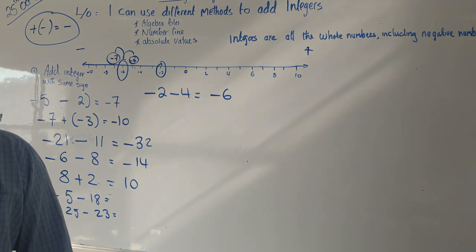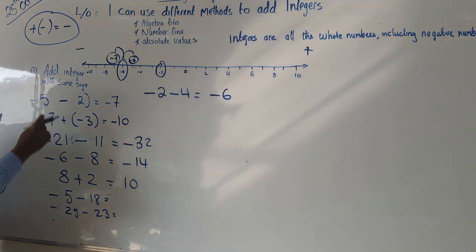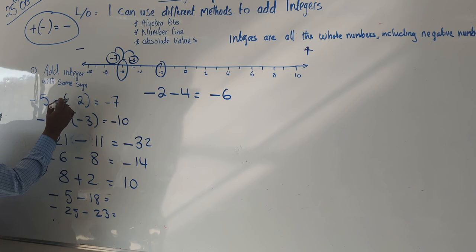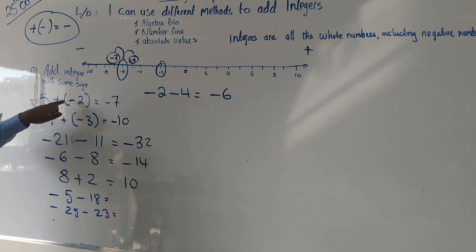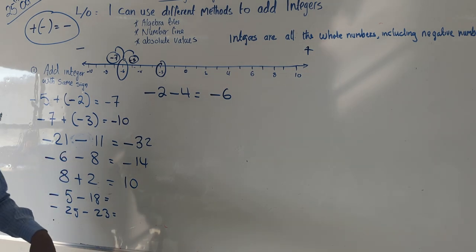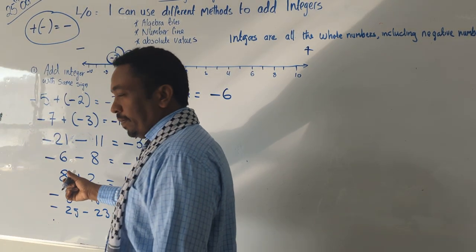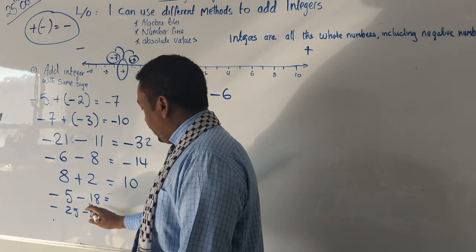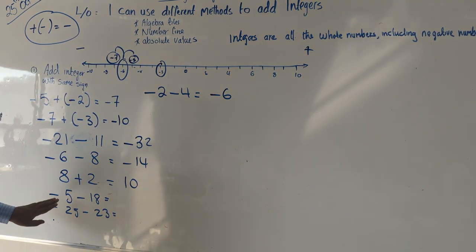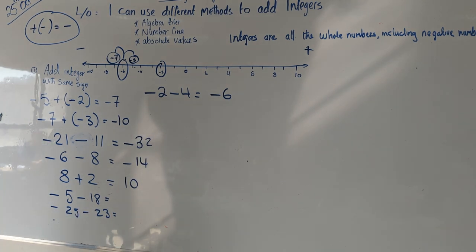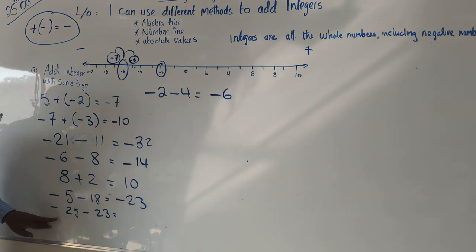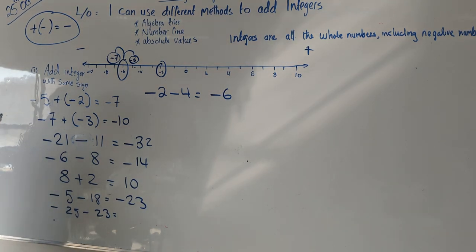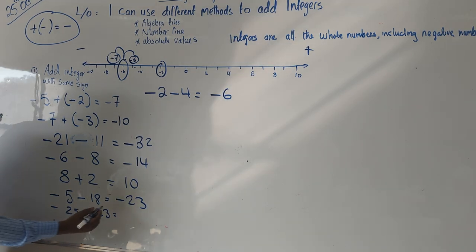Why do we put brackets? Sometimes brackets are used so you can understand which numbers go together. If one bracket is minus and the other is minus, the answer is still negative. But don't worry about the brackets — negative and positive will always become negative. So the answers: negative 5 and negative 18 gives negative 23; negative 25 and negative 23 gives negative 48.